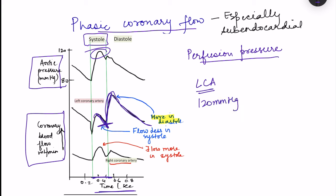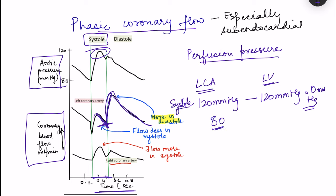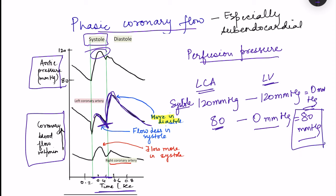Blood flow depends on perfusion pressure — the gradient from the aorta to the region being supplied. For the left coronary artery, the pushing pressure equals aortic pressure (120 mmHg). During systole, left ventricular pressure is also 120 mmHg, so the pressure gradient is zero — meaning almost no blood flow during systole. During diastole, aortic pressure is 80 mmHg and left ventricular pressure is 0 mmHg, giving a perfusion pressure of 80 mmHg, so flow occurs mainly during diastole.